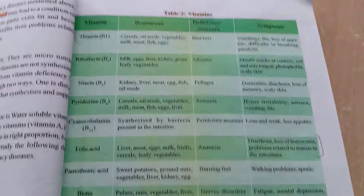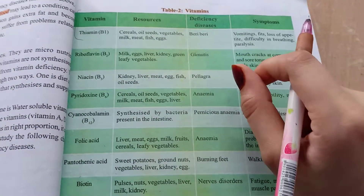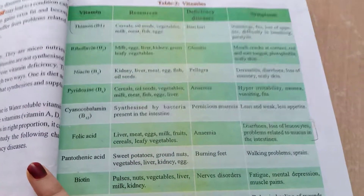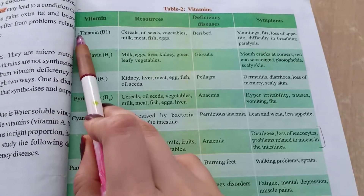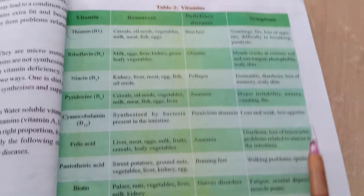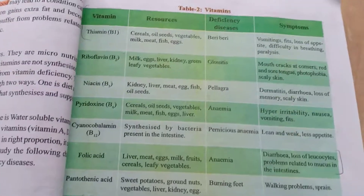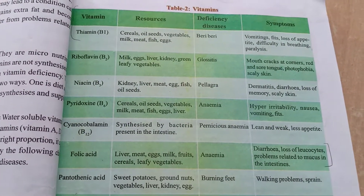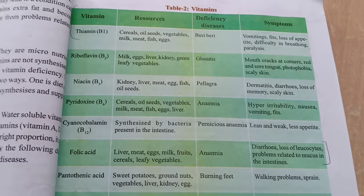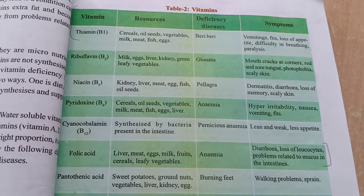In our next class we will discuss vitamin deficiency diseases. Students, in your textbook on page number 19 there is a vitamin table about vitamins. As your homework today, you have to write that section. Take a clear screenshot and write your homework and submit it in your groups. Thank you students, have a nice day.